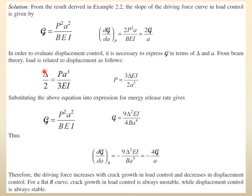Now for displacement control: from beam theory and the previous example, delta/2 = P a³ / (3 E I). We rearrange this to separate the load, so P = 3 E I delta / (2 a³). Once we have this load equation, we go back to the original expression for G and substitute this expression for P, so that the equation for G is now in terms of delta rather than P.